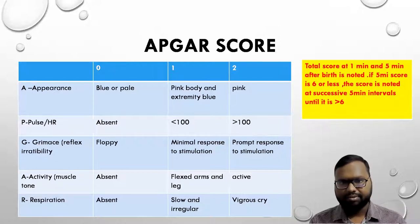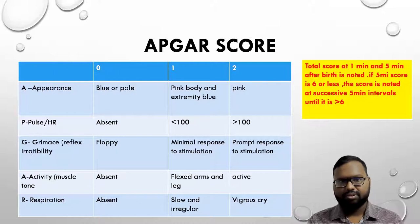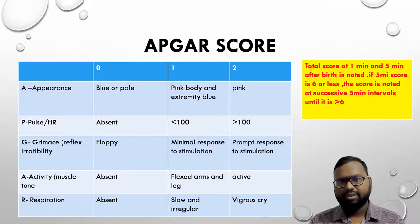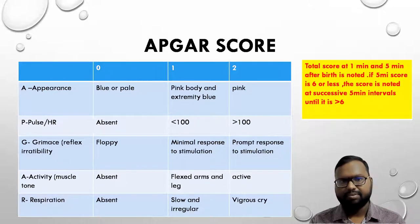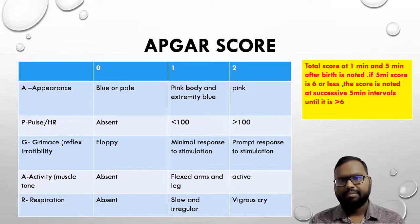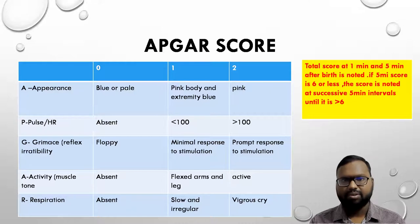Before going further, we must deal with APGAR score. For APGAR score, we have five objective signs — mnemonics for APGAR. A for Appearance: if the baby is blue, we give zero points; if the baby is having heterocyanosis, that is pink body and extremities blue, we assign one point; and if the baby is pink, we give two points.